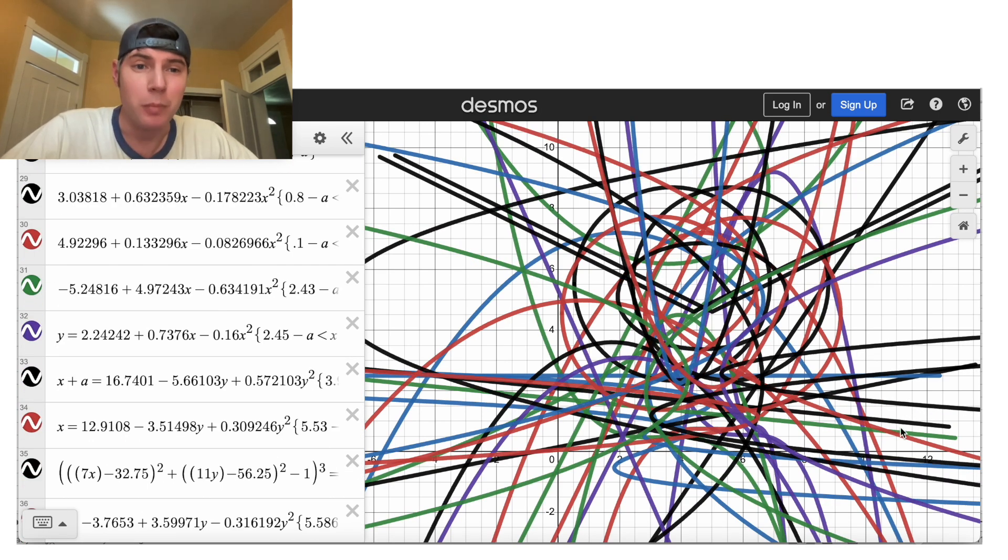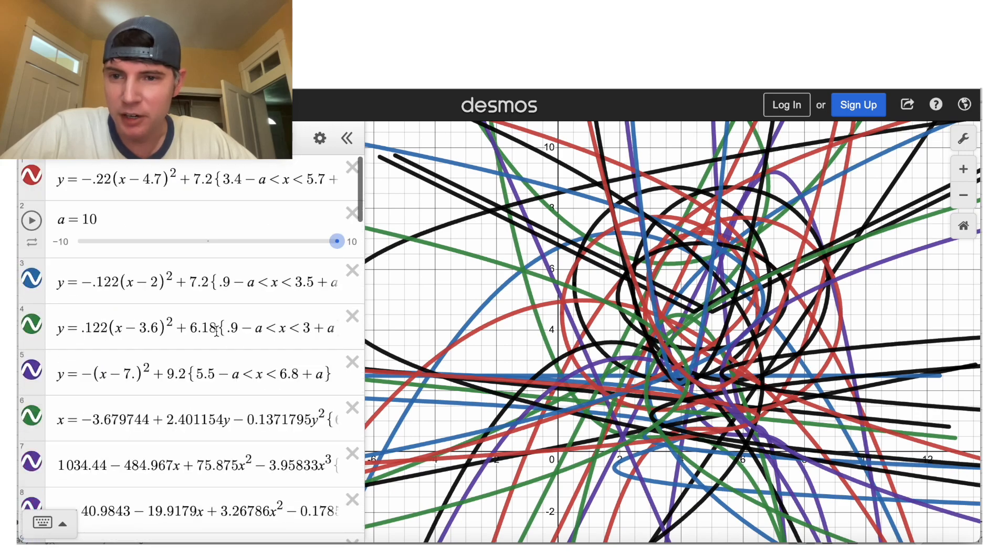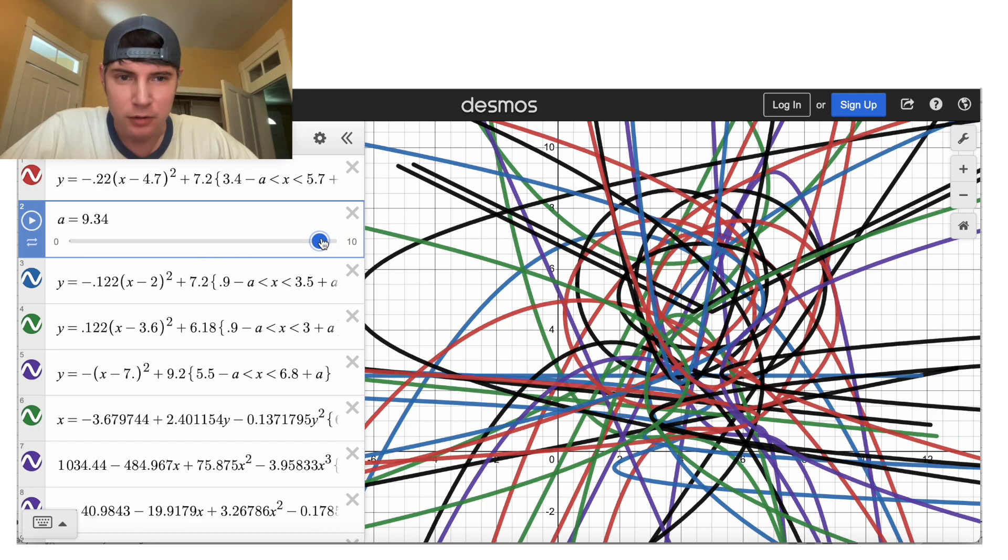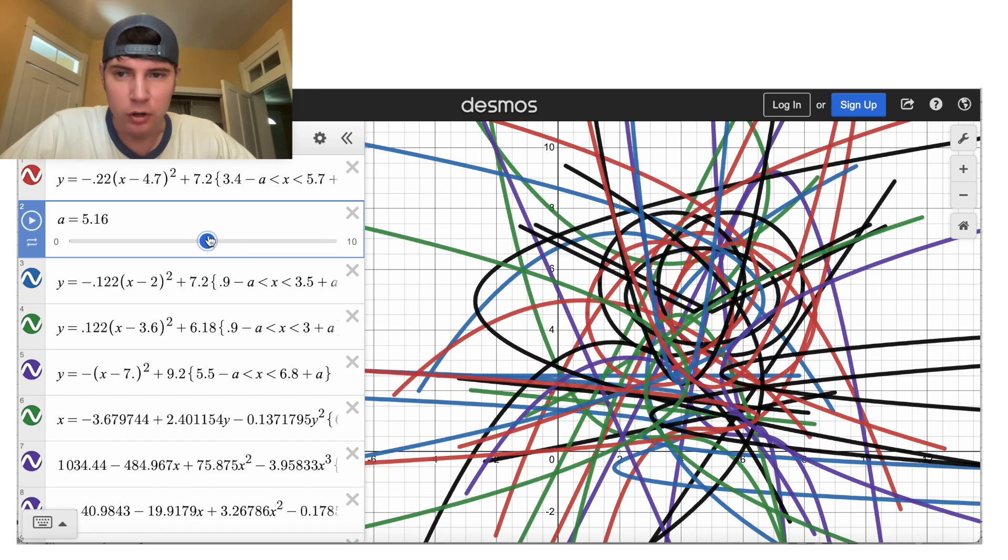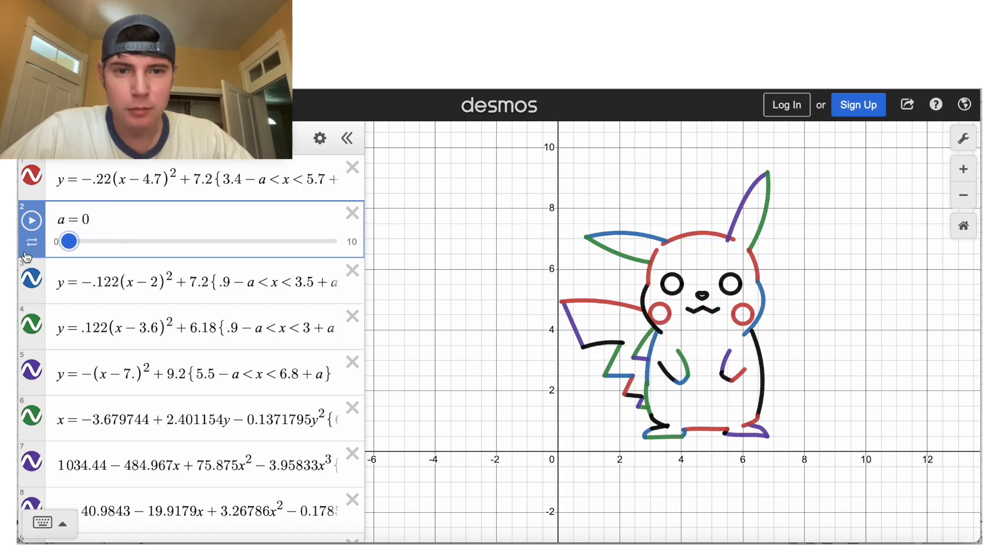Right now, this looks like a jumbled mess. But if we go up here and let's set our minimum to zero. Now when we drag this down to zero, it's going to slowly form Pikachu.